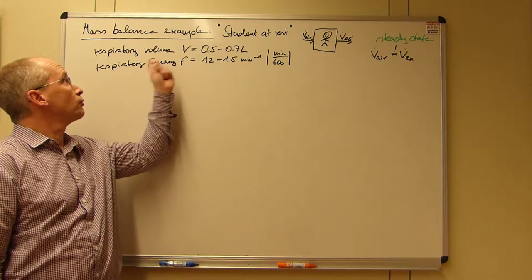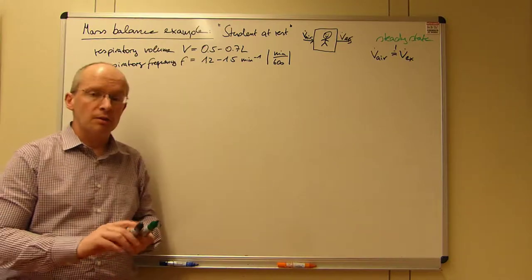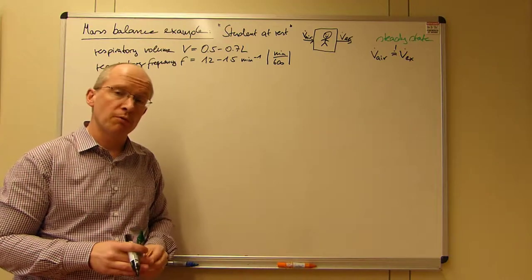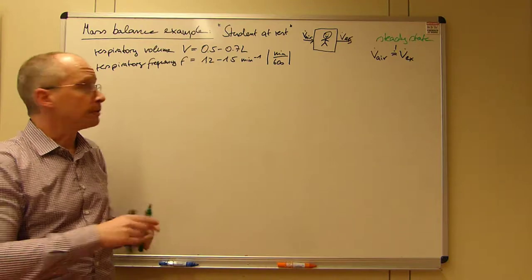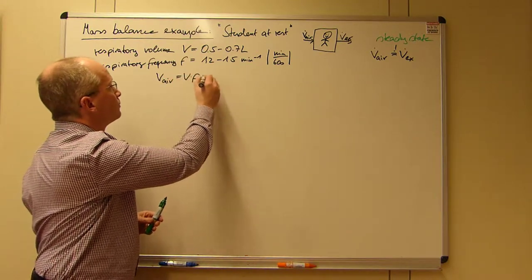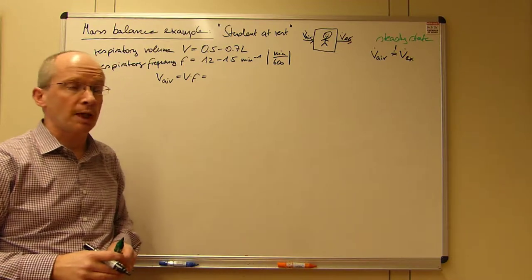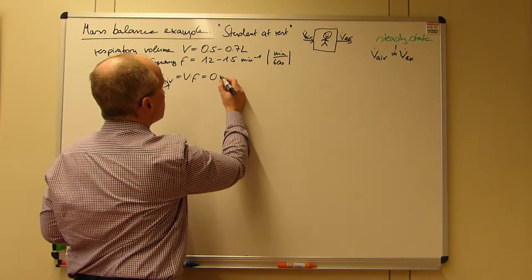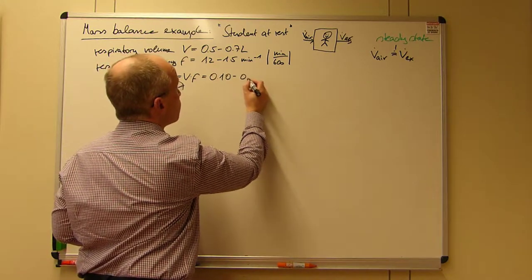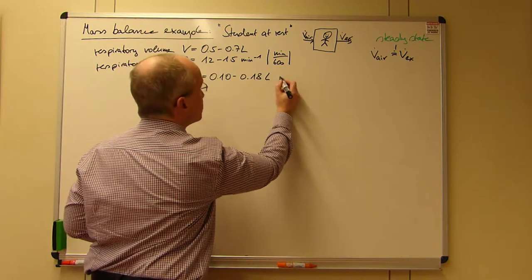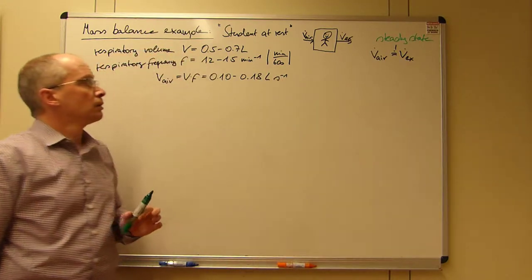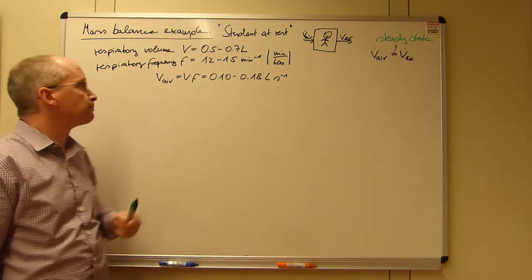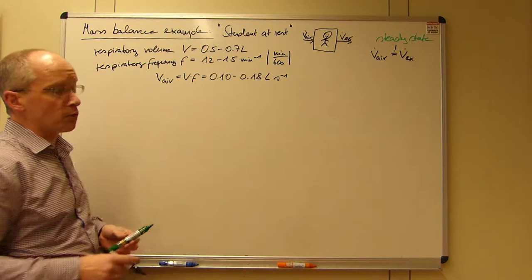So we have established respiratory volume, respiratory frequency. And we can treat this now as a continuous case where we get the average air flow by multiplying volume times frequency. If you look at the values, what we get is 0.1 to 0.18 liters. And this is the amount of air we pick up per second.